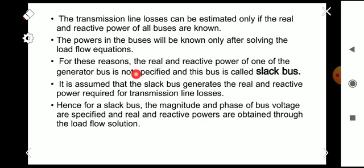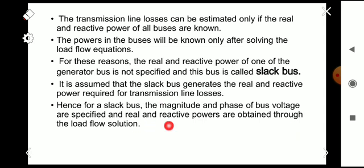For this reason, the real and reactive power of one of the generator buses is not specified, and this bus is called the slack bus. It is assumed that the slack bus generates the real and reactive power required to supply the transmission line losses. Hence, for a slack bus, the magnitude and phase of bus voltage are specified and real and reactive powers are obtained through the load flow solution.